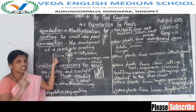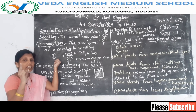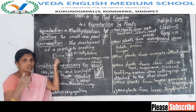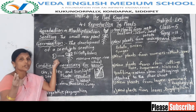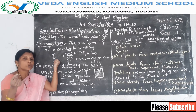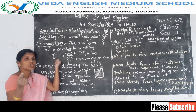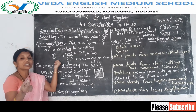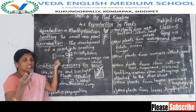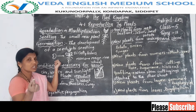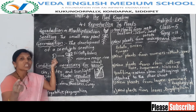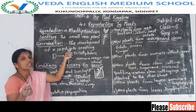A seed has three parts: seed coat, seed leaves, and embryo. The seed coat is the outer covering, and it has a small opening to allow water to enter inside. Seed leaves store food and give food to the baby plant. The third part is the embryo, also called the baby plant.